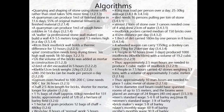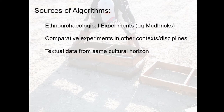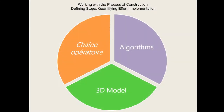That's only one piece of the puzzle. These are all of the algorithms I used to quantify different aspects of the construction process. The sources of these algorithms are varied: ethnological experiments like the one we just saw, comparative experiments in other contexts or disciplines, and textual data from the same cultural horizon. By putting these three aspects together, we can understand the energetic costs of a building.